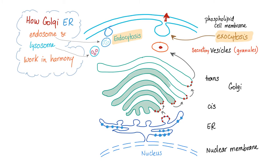Finally, we have the secretory vesicles, or secretory granules. By exocytosis, they are secreted to the outside of the cell. On the other hand, endocytosis is the process of bringing stuff from outside the cell to the inside. Here we have the endosome, and if material is going to be digested, the lysosome comes into play. The Golgi, endoplasmic reticulum, endosome, and lysosome all work in harmony — they form a symphony.